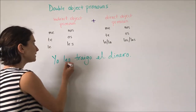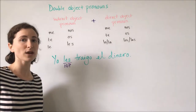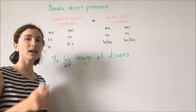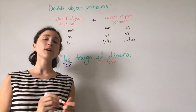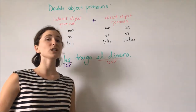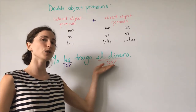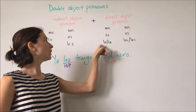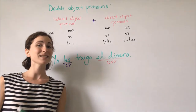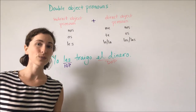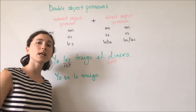Here we have 'yo les, a ellos — yo les traigo el dinero.' Once again, what is our direct object? What do I bring? El dinero, the money. If I want to make this shorter, I can use a direct object pronoun in place of 'el dinero.' Which would it be? Lo, because it is masculine and singular. When I change this sentence to include 'lo,' I also now need to change 'les.' The result is: 'Yo se lo traigo.'